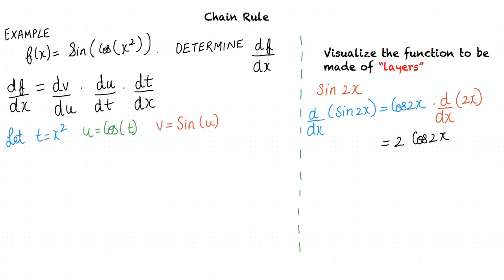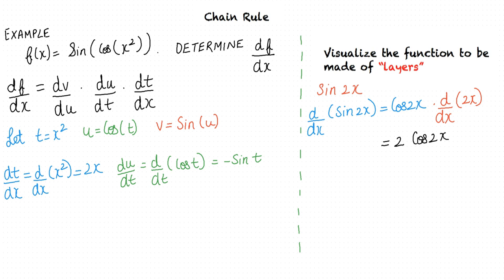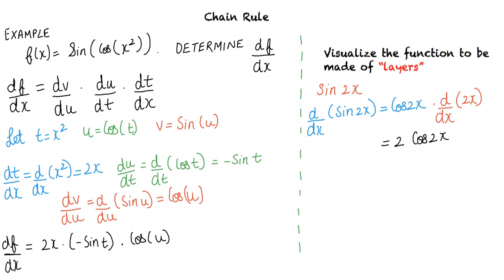The next step is to evaluate the individual derivatives. dt/dx equals d/dx of x², which equals 2x. du/dt equals d/dt of cos(t), which equals negative sin(t). dv/du equals d/du of sin(u), which equals cos(u). Substituting into the chain rule formula, df/dx equals 2x times negative sin(t) times cos(u). We substitute for u and t in terms of x: since u equals cos(t) and t equals x², df/dx equals negative 2x times sin(x²) times cos(cos(x²)).